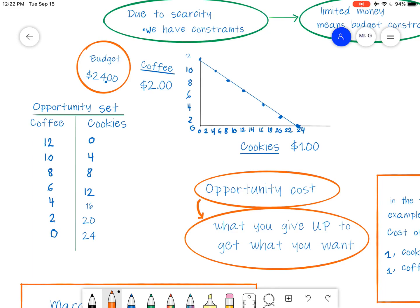So 24 cookies you can basically have and zero coffees. And so this is our opportunity set. And so you have to start with this, get all your points, all the numbers, all the different combinations that you can do that your budget is zero. And basically you have all the different combinations of things you can buy.